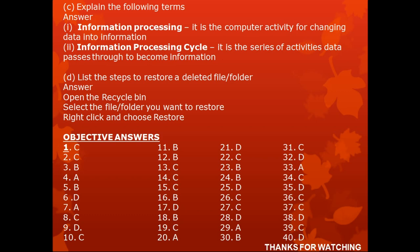Explain the following terms. Information processing: it is the computer activity of changing data into information. Information processing cycle: it is the series of activities that data passes through to become information. Be careful not to interchange these definitions. The five stages are: input, processing, output, storage, and distribution.